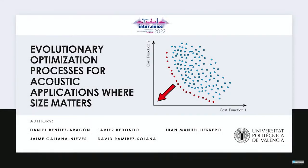Welcome back to the second part of the simulation session this morning. We are now moving on with a talk by Daniel Benitez-Araro from the University of Valencia. Together with his co-authors, we will hear about work where the size of rooms or diffusers is considered — something acoustics-related where size matters. Please go ahead, Daniel. Hello everyone, my name is Daniel Benitez, I come from Spain, and I'll be talking about evolutionary optimization processes for acoustic applications where size matters. I developed this article with colleagues from the Universidad Politécnica de Valencia, also from Spain.